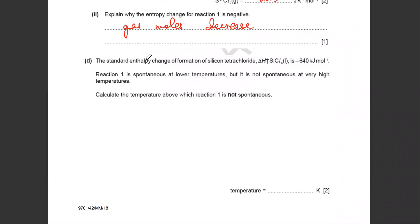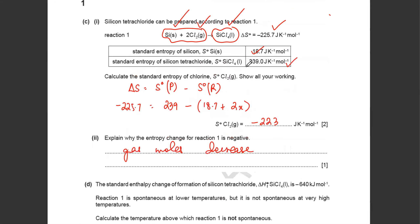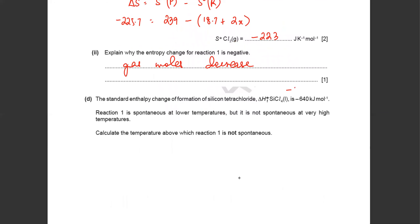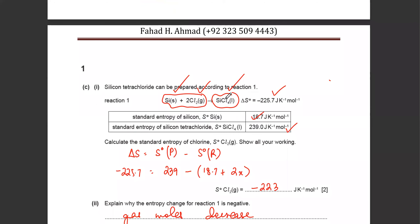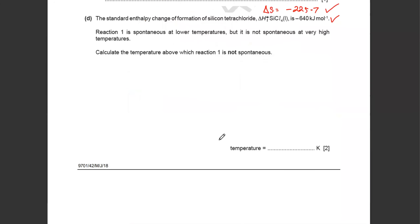Part D is asking for the standard entropy change of formation. Delta S is already calculated as minus 225.7. You also have delta H — specifically delta H_f of SiCl4, which is when one mole of SiCl4 is formed from its constituent elements. It's the same reaction, so now you have both values.